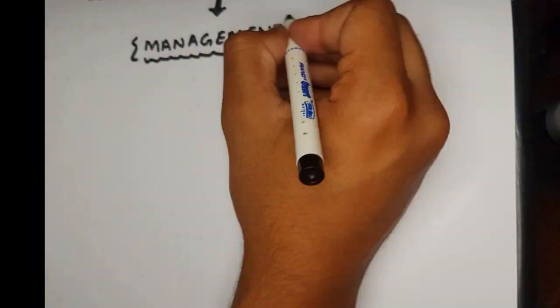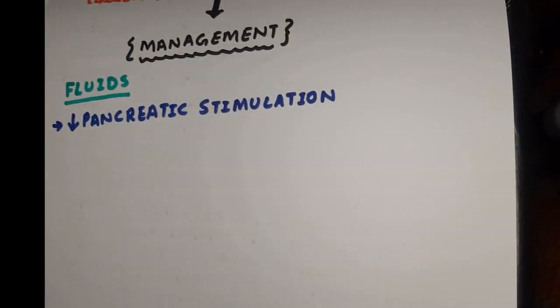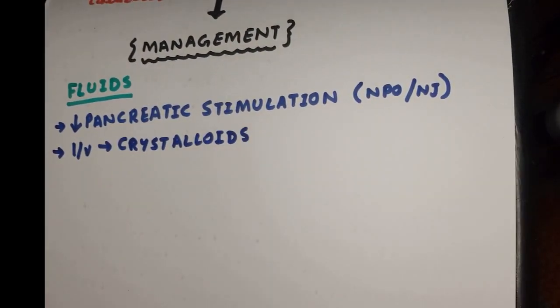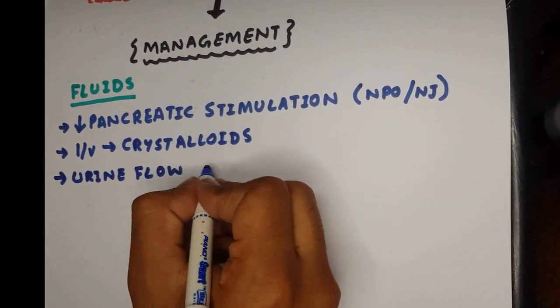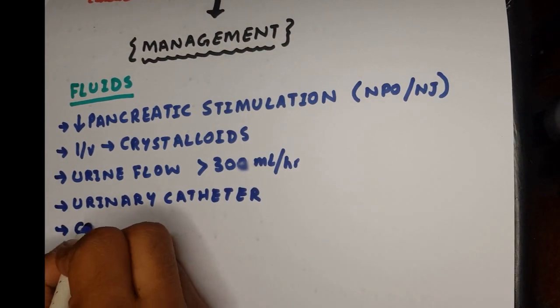When managing, we try to decrease the pancreatic stimulation by keeping the patient NPO and even considering NJ feeding. We give lots of crystalloids until the patient is vitally stable, and we monitor the urine flow to more than 30 ml per hour.